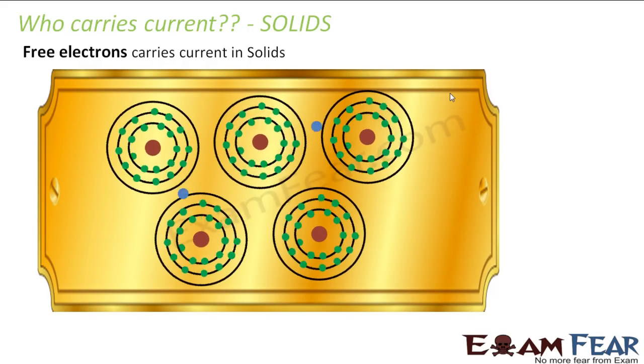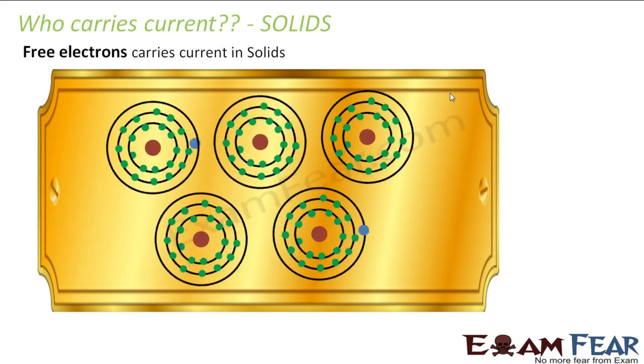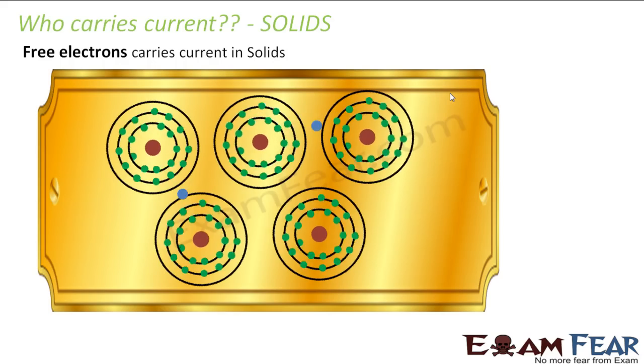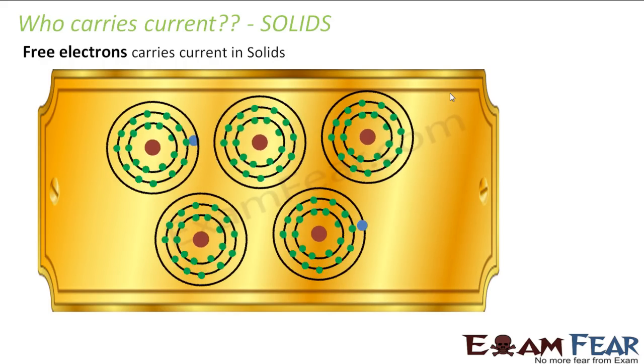Is it electron every time no matter whatever the object may be? It is always an electron whose responsibility is to carry current, or is it different in different kinds of objects? So now we will see the current carriers for solids, in case of liquids, as well as in case of gases.